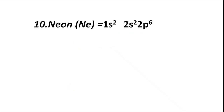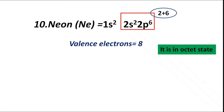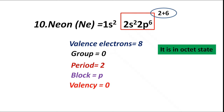Atomic number 10, neon (Ne), has electronic configuration 1s2 2s2 2p6. The valence shell is L. Total valence electrons are 2 from 2s2 and 6 from 2p6, equal to 8. It is in octet state, therefore group 0, period 2. Block P. Valency is 0.